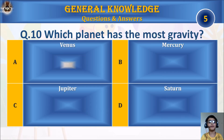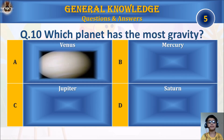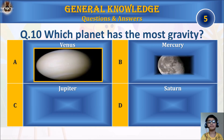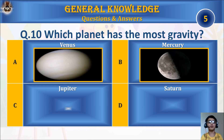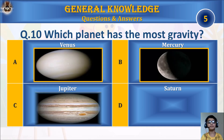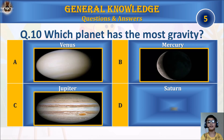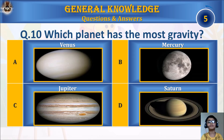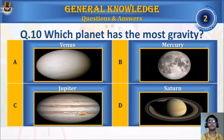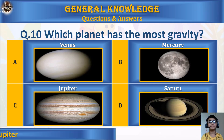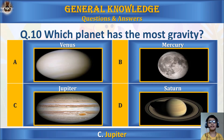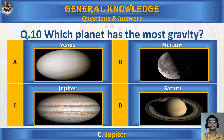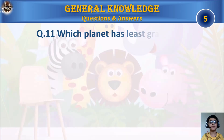Question 10: Which planet has the most gravity? A. Venus, B. Mercury, C. Jupiter, or D. Saturn? Your time starts. The answer is C. Jupiter.